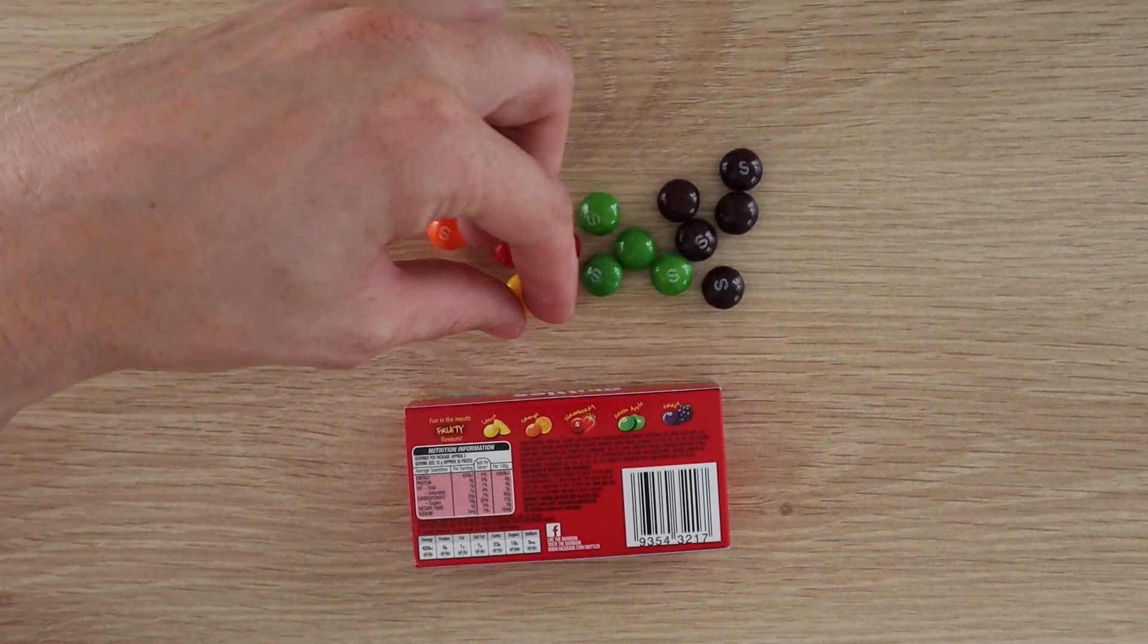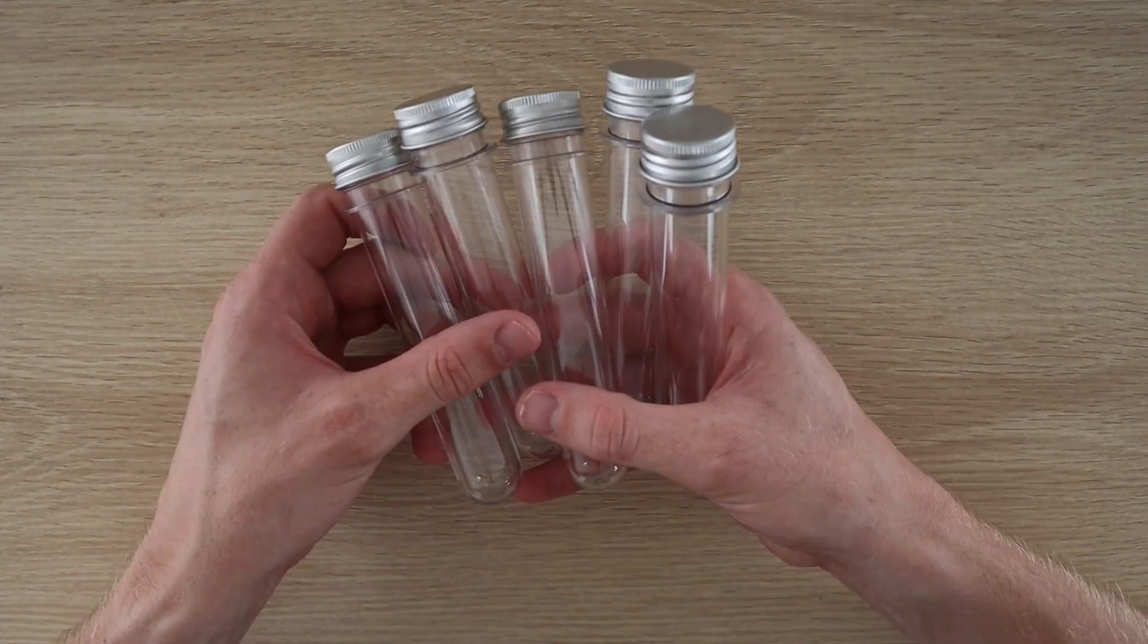Skittles come in five standard colors and we're going to be sorting them into these clear plastic test tubes which I found on eBay.